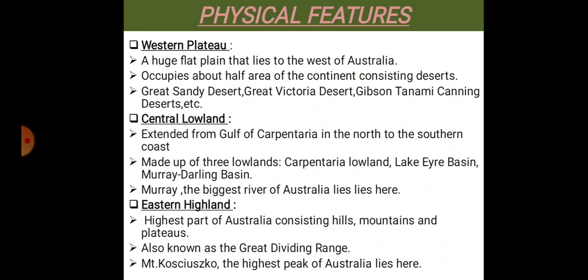The physical features of Australia are divided into three categories: Western Plateau, Central Lowland, and Eastern Highland. The Western Plateau is a huge flat plain which lies to the west of Australia. This region occupies half of the area of Australia and consists mainly of desert. The Great Sandy Desert, the Great Victoria Desert, and the Gibson-Canning Desert lie here.